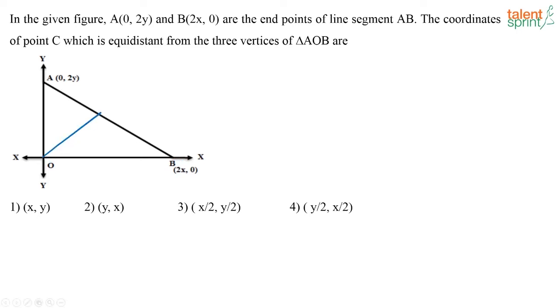So basically, which is the point that will be equidistant from three vertices? It has to be the midpoint of this line AB, or the hypotenuse. This is a right-angled triangle. So let us assume this is the midpoint of this hypotenuse AB. Let that be M.